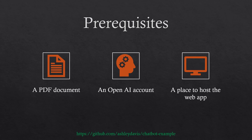Before we can make an OpenAI chatbot, we need to have a few things in place. First, we need a PDF document that we can upload to our chatbot — when the chatbot is finished, we're going to be able to ask questions about that document. Next, we need an OpenAI account. OpenAI is what makes all this possible; they are the company behind ChatGPT, and they provide the API that will power our chatbot.